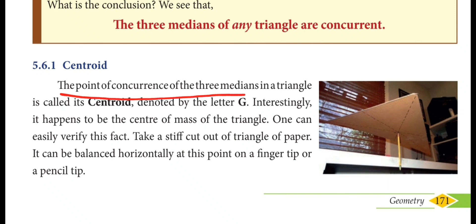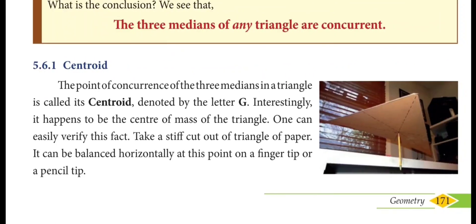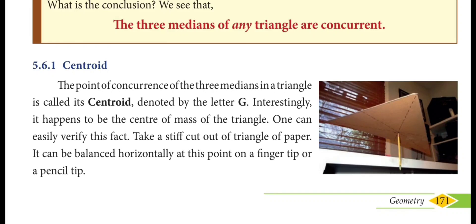Centroid: the point of concurrency of the three medians of a triangle is called its centroid. The three medians each go from a vertex to the opposite side. The centroid is denoted by the capital letter G.